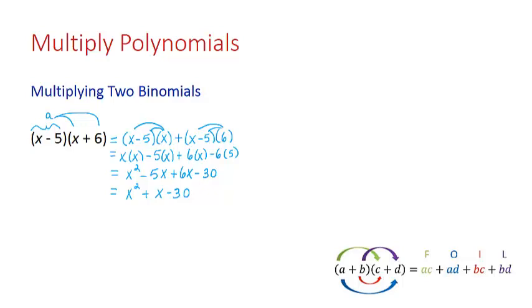Do you see what really happened here, that in the final result, each term of the first binomial was distributed to each term of the second binomial? So let's look at it like that.